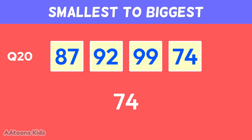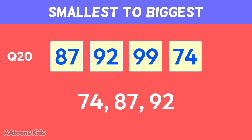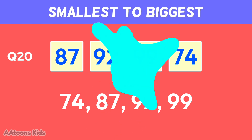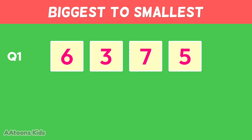Arrange these numbers from smallest to biggest: sixty-four, eighty-seven, ninety-two, ninety-nine.